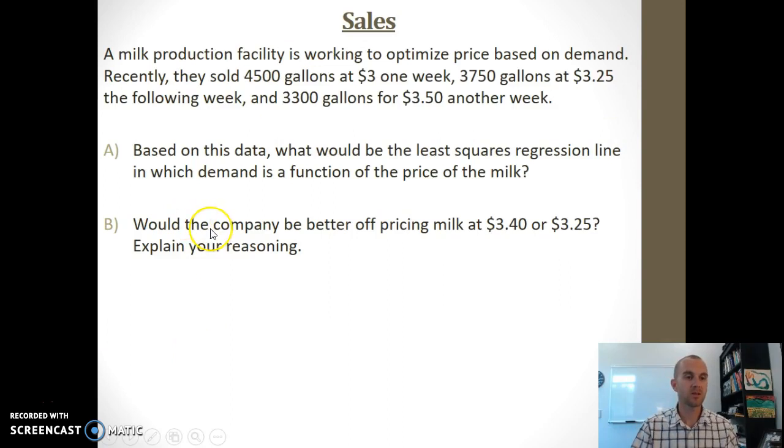Say we have a milk production facility trying to optimize price based on demand. Recently, they sold 4,500 gallons at $3 one week, 3,750 gallons at $3.25 another week, and 3,300 gallons at $3.50 another week. Based on this data, what would be the least squares regression line in which demand is a function of the price of the milk? Would the company be better off pricing milk at $3.40 or $3.25?